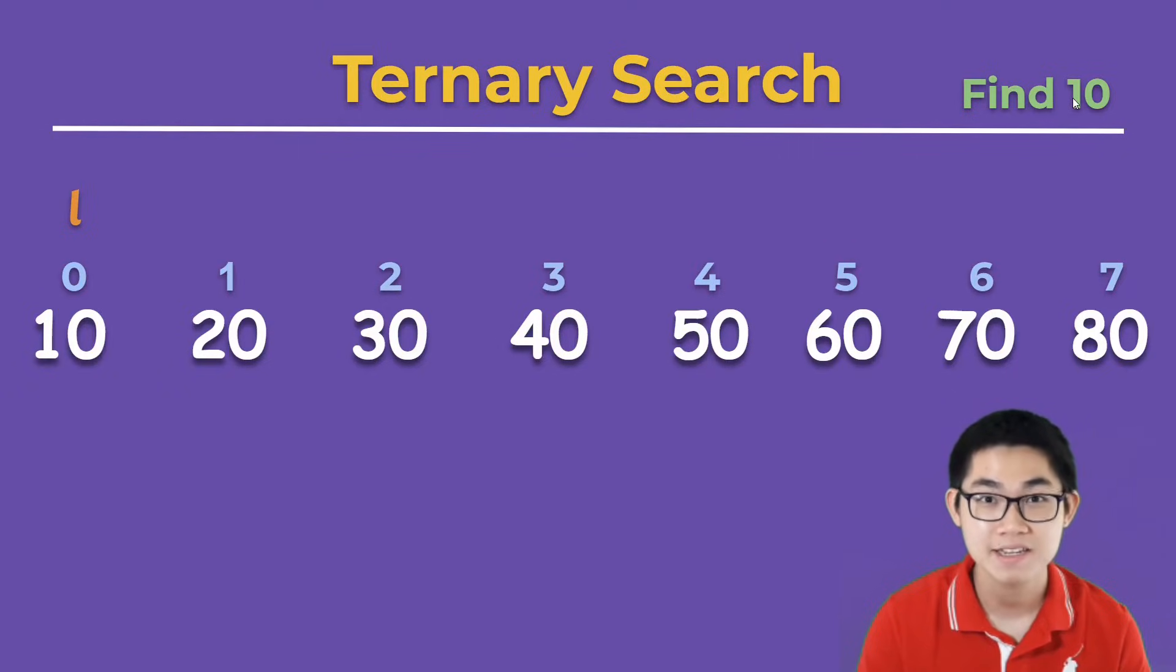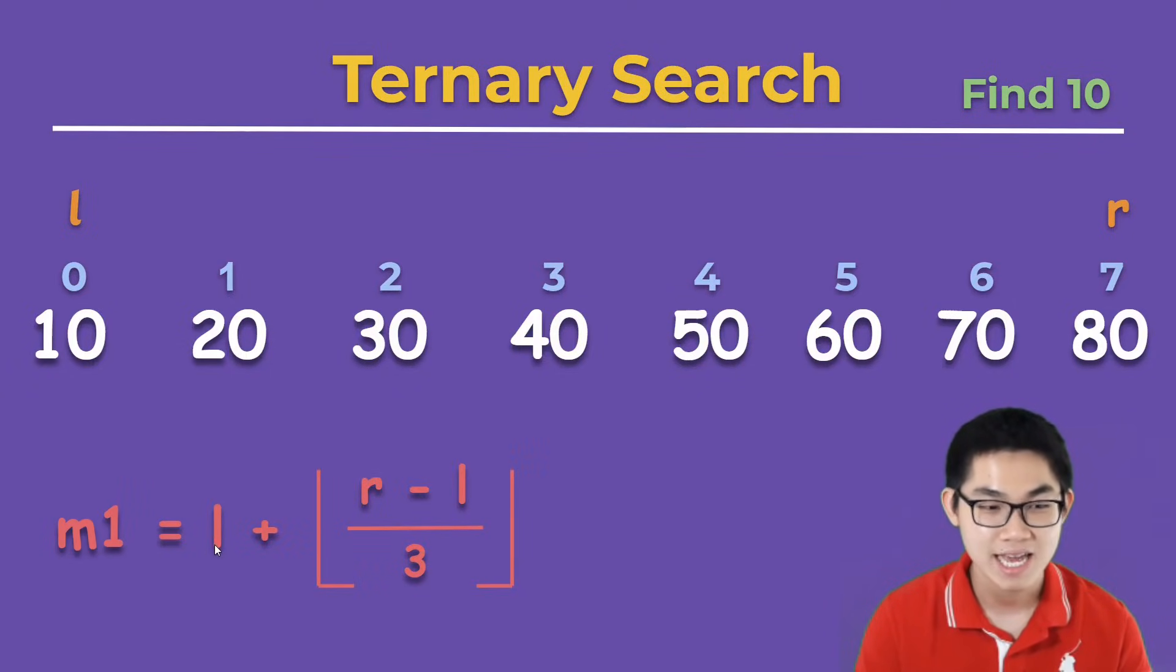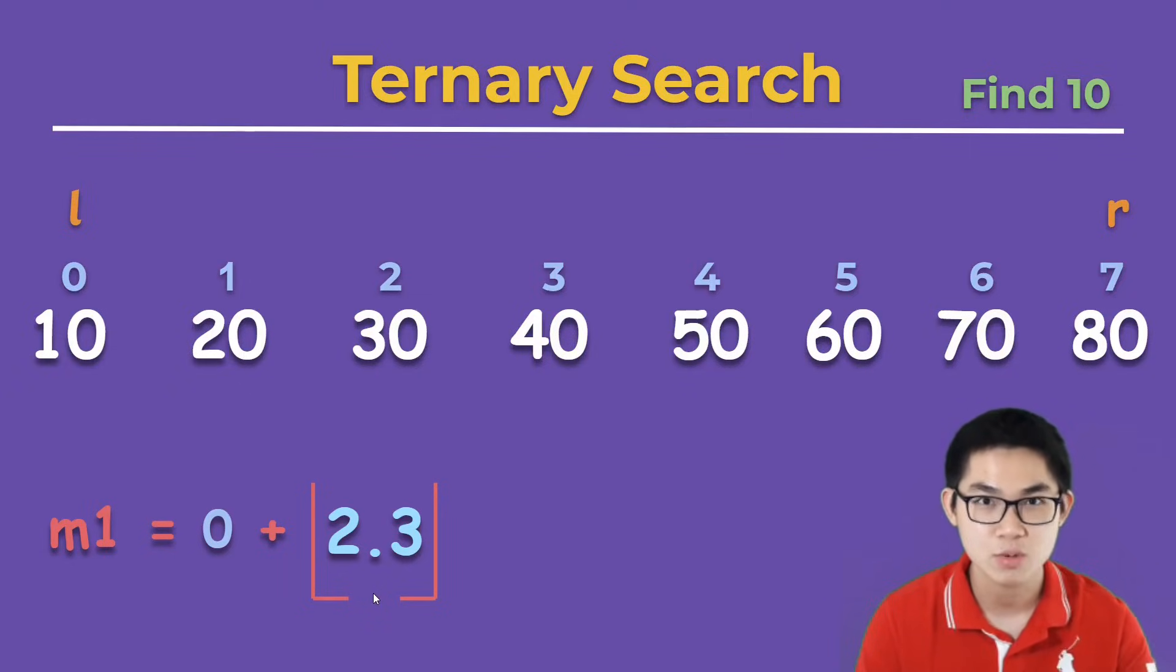Now let's try to find number 10. The first step is to put l at the beginning of the array and r at the end of the array. We need to calculate two mids. So the first mid is l plus r minus l divided by 3. That's just a formula. So l is 0, r is at index 7, and l is at 0 again. So you get 7 divided by 3, which gives you 2.3. And this sign means you round down to 2. So m1 is at index 2.